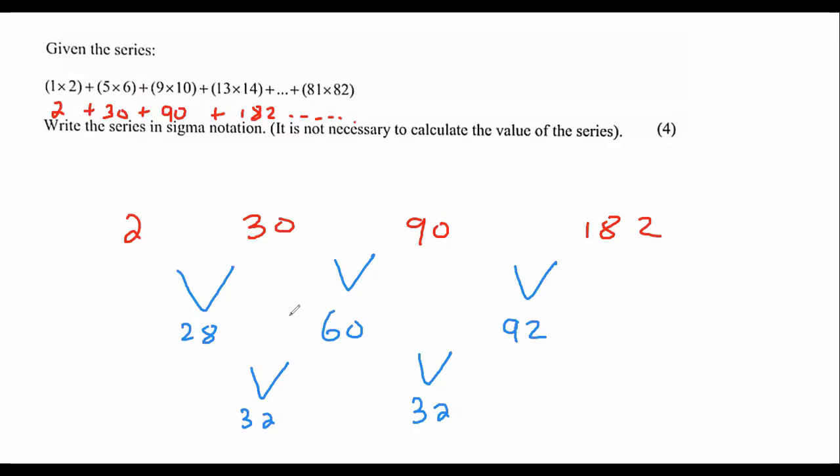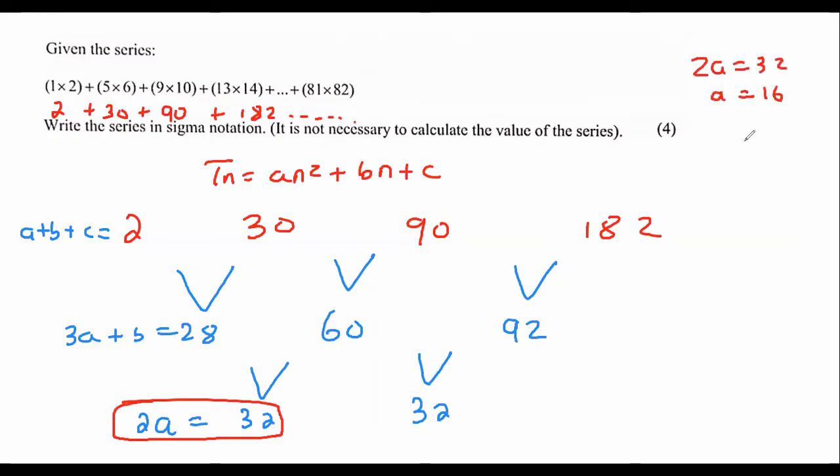So what we can then do, and each teacher has their own method, but one of the most popular methods I've seen with South African teachers is to use this technique. So 2a is equal to that. 3a plus b is equal to that. And then a plus b plus c is equal to that. And we know that the general formula of a quadratic is an squared plus bn plus c. So I'm going to start at the bottom. And I'm going to find a. So if 2a is 32, then a must be 16.